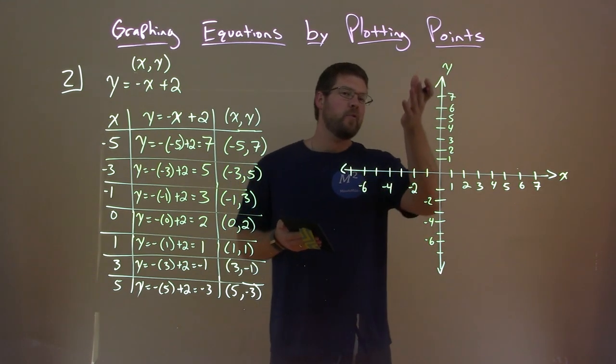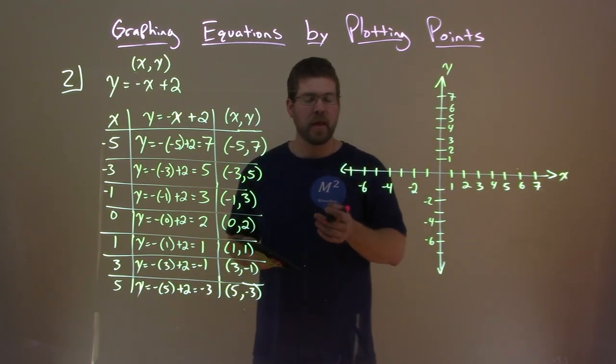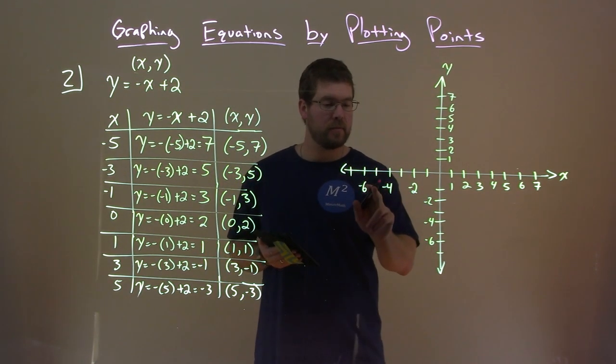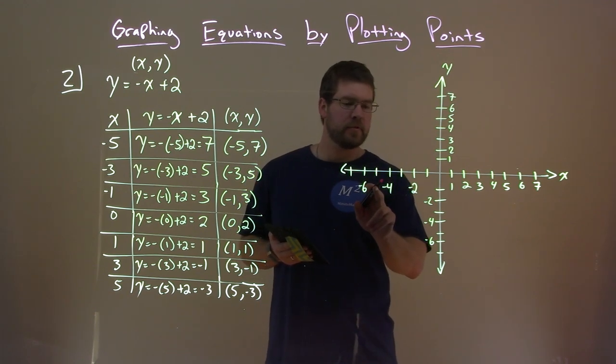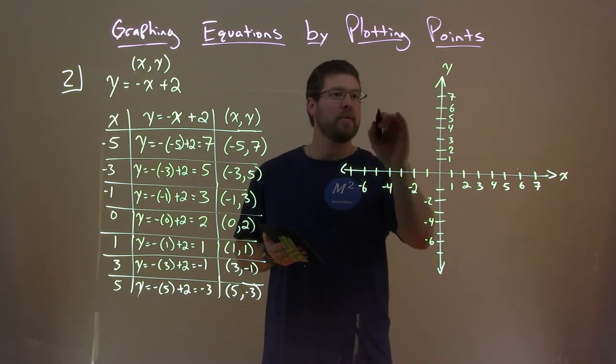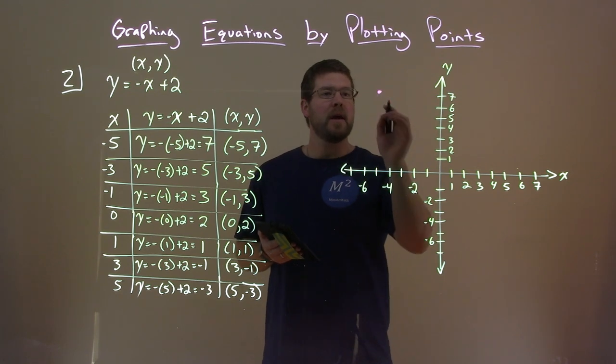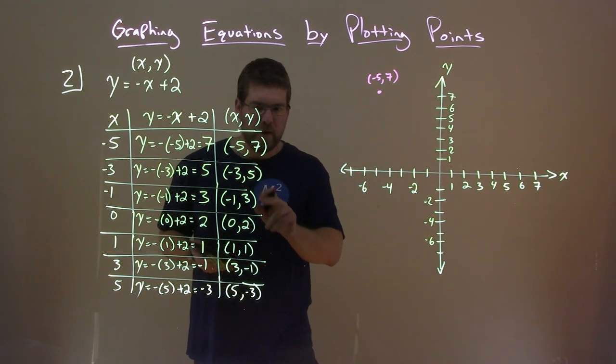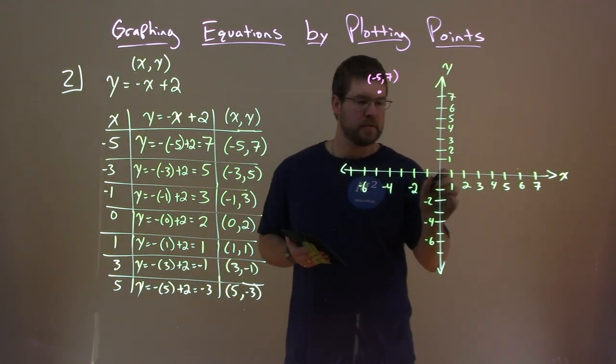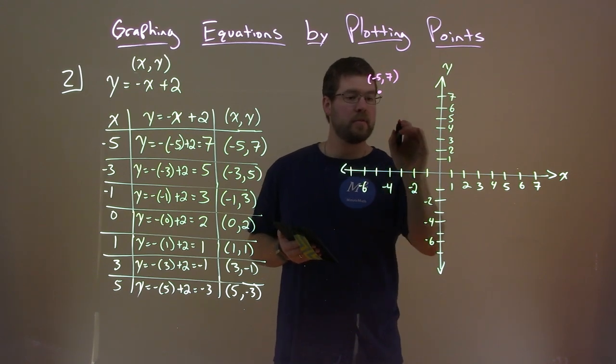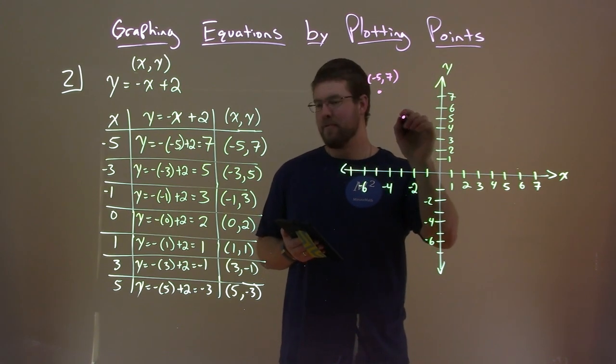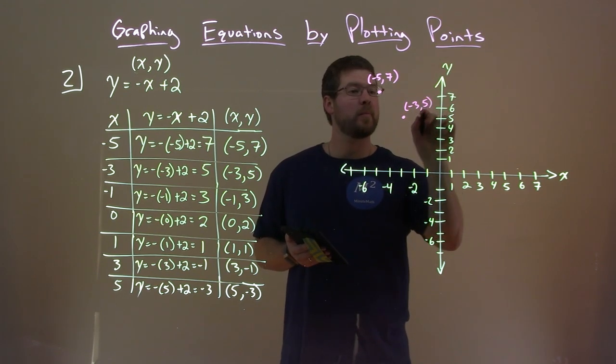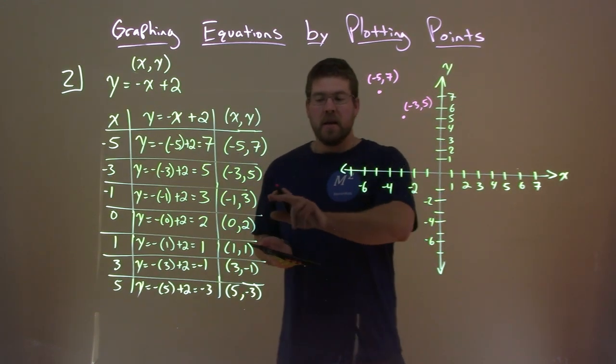So now we have our x, y axis. Let's plot some points. First one is negative 5 comma 7. We go negative 5 in the x axis, which is right here. I didn't write them all because it would be kind of jumbled. Then we go up 7 units. Let's label it negative 5 comma 7. Next point, negative 3 comma 5. We have negative 3 here, then up 5 units, roughly here. I've free-handed everything, so hopefully it lines up straight. You will probably have graph paper.